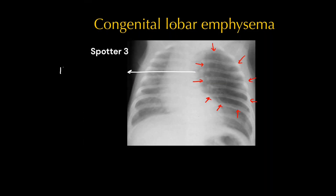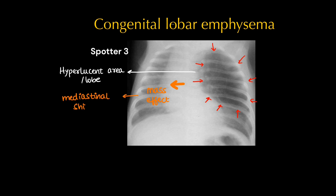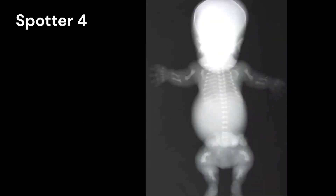Spotter 3 was congenital lobar emphysema. Here we can see lucent lung parenchyma in the left upper zone with mass effect, i.e. mediastinal shift towards the opposite side. The most common site is the left upper lobe.